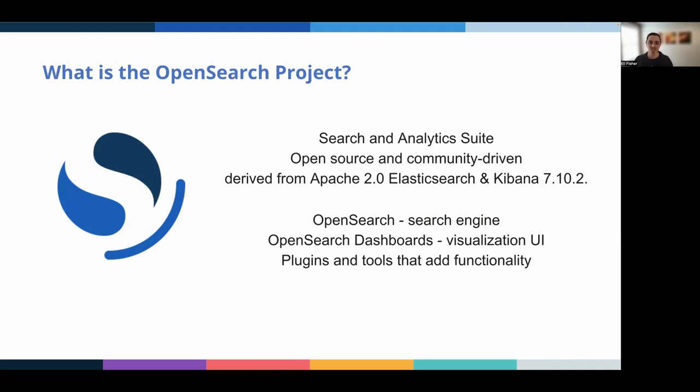It consists of a search engine, OpenSearch, a dashboard analytics UI, OpenSearch dashboards, and a number of plugins and tools that add advanced functionality for things like advanced security, alerting, anomaly detection, k-nearest neighbor search, and observability features, and much more.